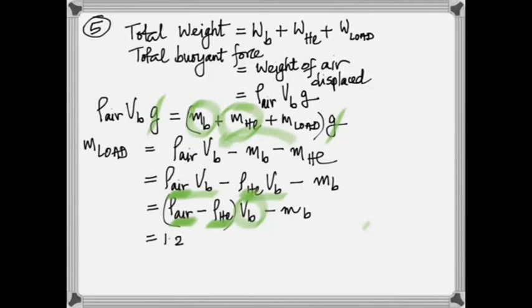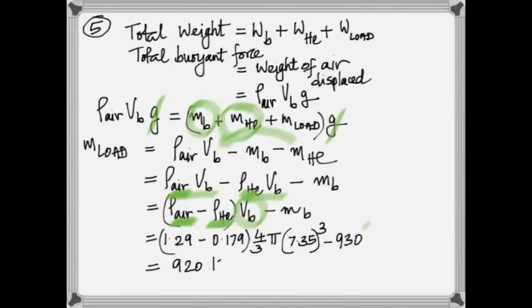And then the values are given. You need not memorize the density where it's 1.29, helium is 0.179. What's the formula for volume of a sphere? 4/3 πr^3. That's why you see 4/3 π radius cubed minus 930. That gives you 920 kilograms is the maximum mass of cargo that that balloon can lift. Anything more than that it's going to come down. Anything less than that it's going to keep going up.